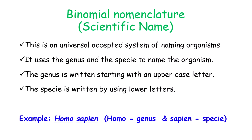After classifying organisms, we also give them names, which is called binomial nomenclature, or the scientific naming system. This is a system that is universally accepted for naming organisms. The word binomial — with the prefix bi — represents two, so it is a two-name system. The two names used to classify organisms are the genus and the species.